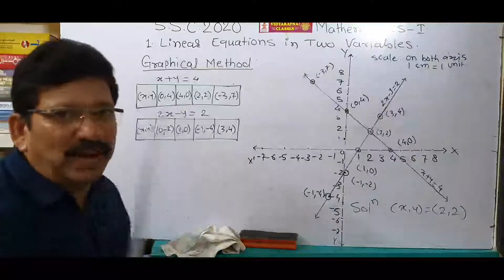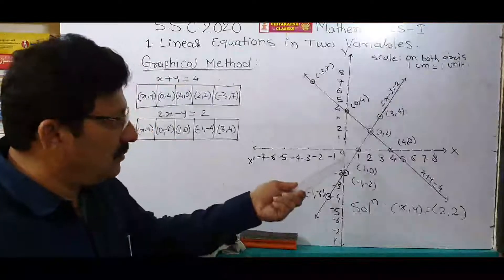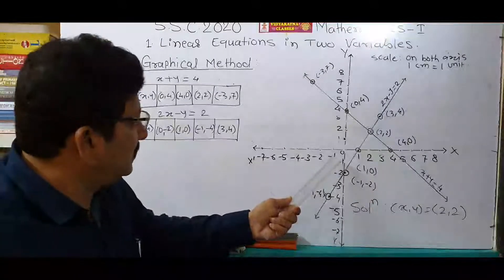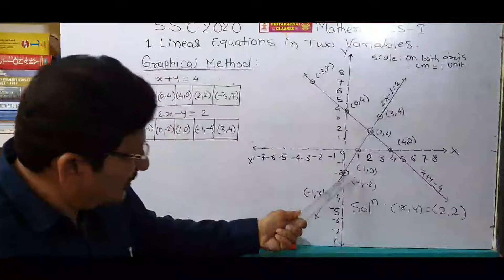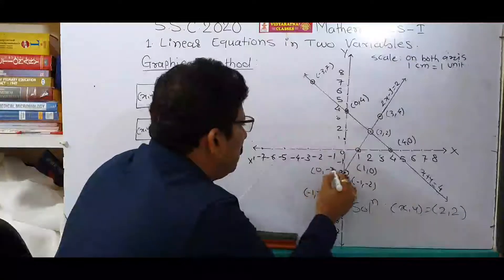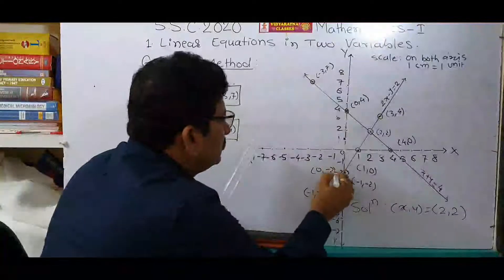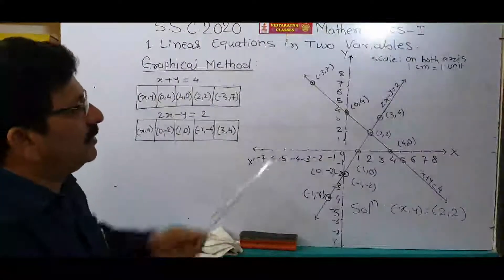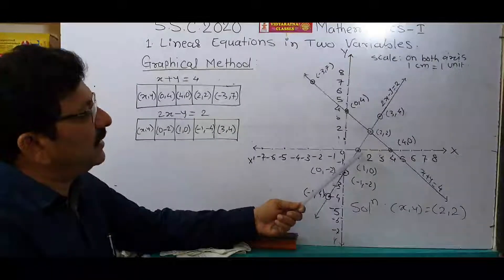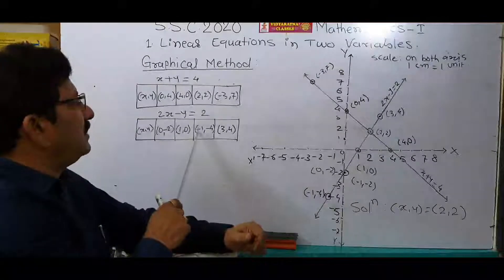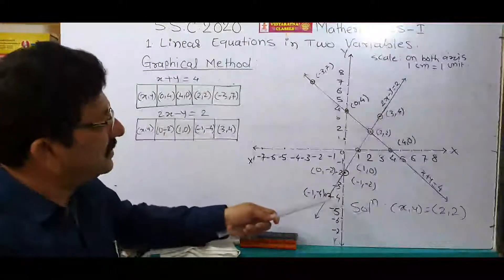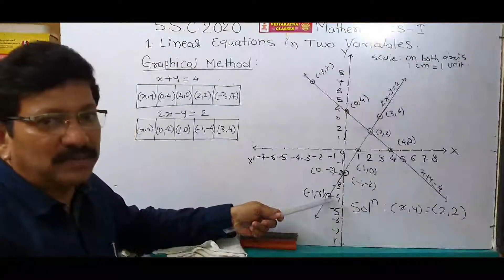First is (0, minus 2): x is 0, y is minus 2, so it is on the y-axis at minus 2. Our next ordered pair is (1, 0): 1 on the x-axis and 0 on the y-axis — this is the point. The third one is (minus 1, minus 4): minus 1 on the x-axis and minus 4 on the y-axis. This is the third point we have drawn.